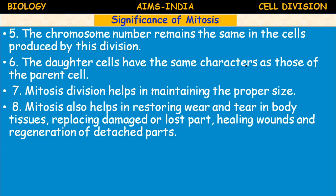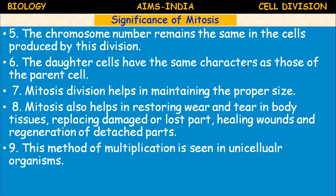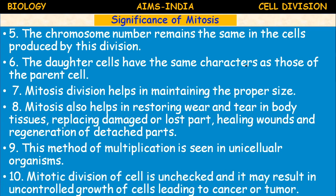In our digestive system, respiratory system, and many other systems, cells are damaged during metabolism. Those cells must be replaced — otherwise, the function of the organ may be hampered. Mitosis cell division helps in replacing damaged or lost cells, and plays a very important role in wound healing. If mitosis division is unchecked due to some mutations, uncontrolled mitosis division takes place, which results in cancerous cells.